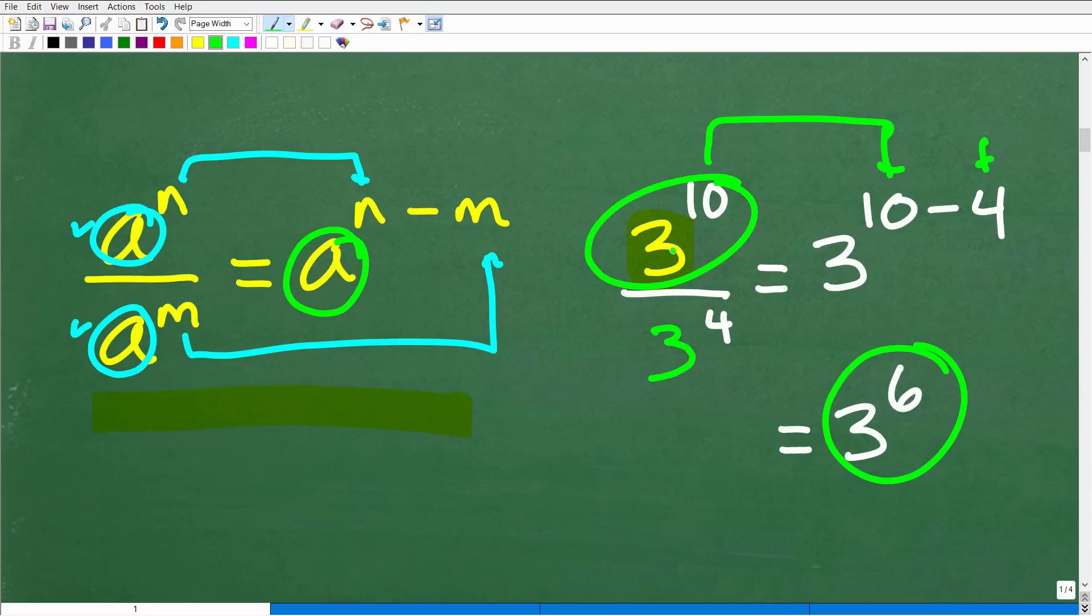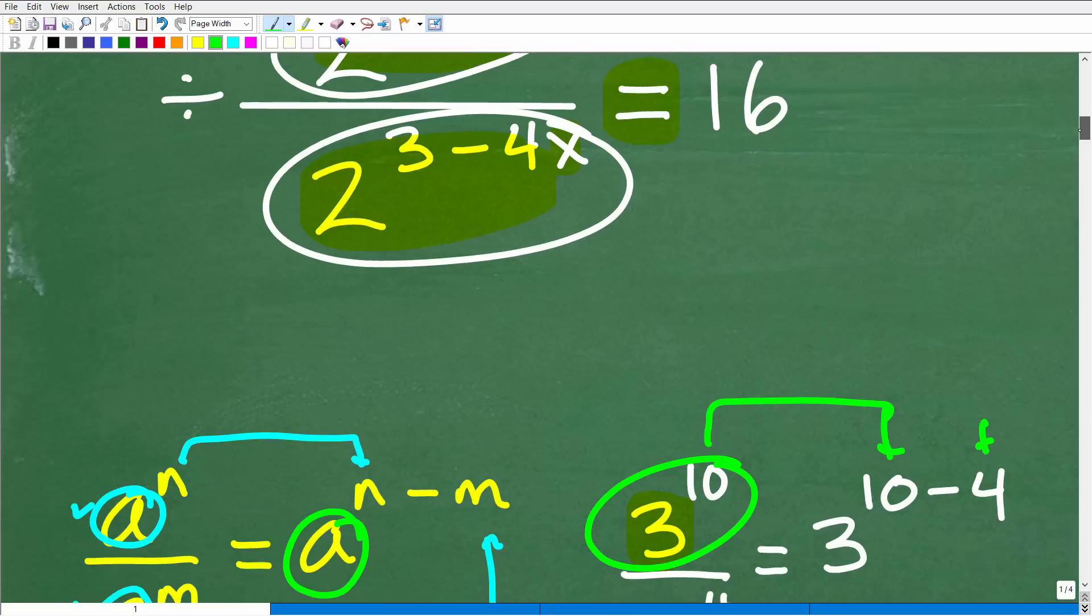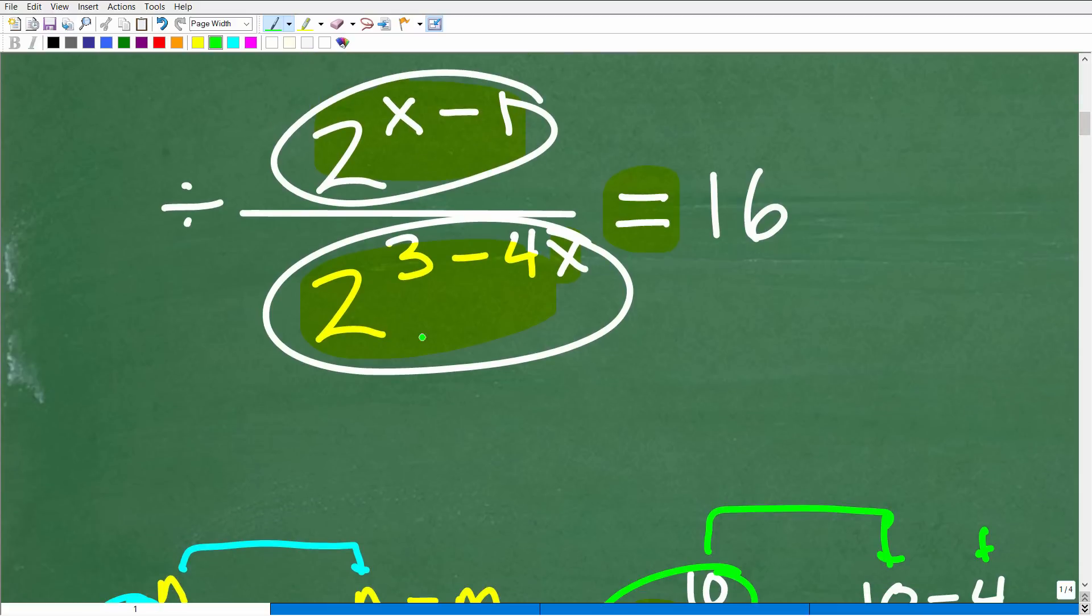So 3 to the 10th divided by 3 to the fourth is going to be equal to 3, and then 10 minus 4. Remember, it's the numerator exponent first, and then the denominator exponent second, we're going to subtract. So that's 3, 10 minus 4, which of course is 3 to the sixth power. And this makes sense because 3 to the 10th means 3 times itself 10 times. I got a bunch of threes up here in the numerator, and I'm divided by 3 to the fourth, which is four threes down here being multiplied by itself. I can cross cancel these threes with four threes up in the numerator and I'm left with still six threes, which of course is 3 to the sixth power. So the rule makes sense.